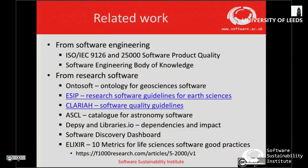There's a lot of related work. There's a lot on software quality in software engineering, and in research software there's an increasingly large set of guidelines. Each community is starting to come up with their own guidelines for what software quality means. For instance, ESIT have produced guidelines for Earth Sciences, CLARIA have done guidelines for digital humanities, and ASCL have started doing work for astronomy.